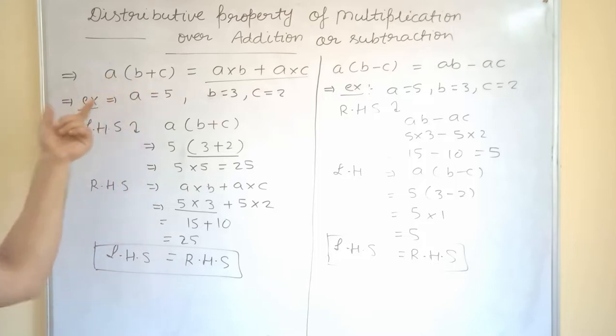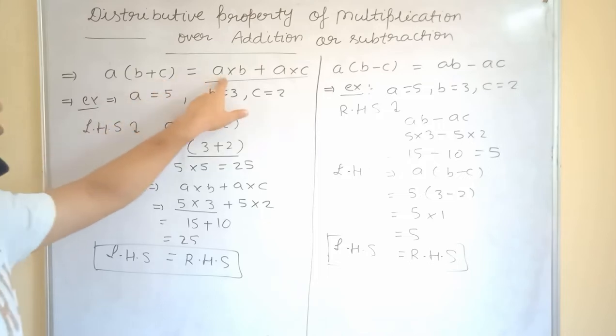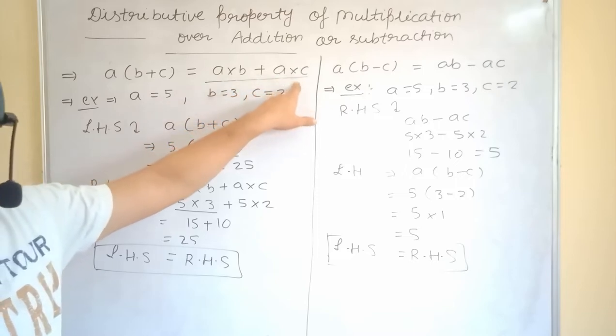If I talk about addition, distribution of multiplication over addition that we are going to see first. So, you can see over here B, C. They are getting added by plus sign. And now we have to distribute A inside the bracket. So, this is how we can distribute A into B plus A into C.